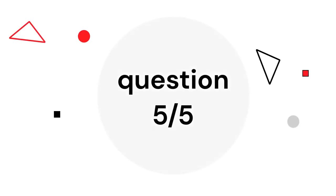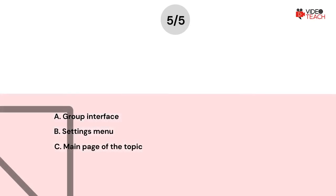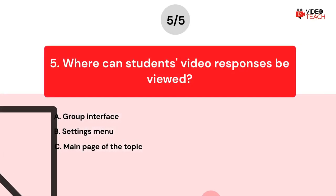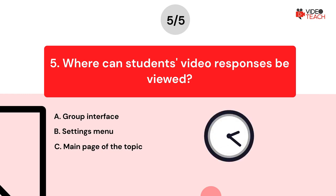Question number five. Where can students' video responses be viewed? Option A: Group interface. Option B: Settings menu. Option C: Main page of the topic. Now you have about 15 seconds to think about your answer.